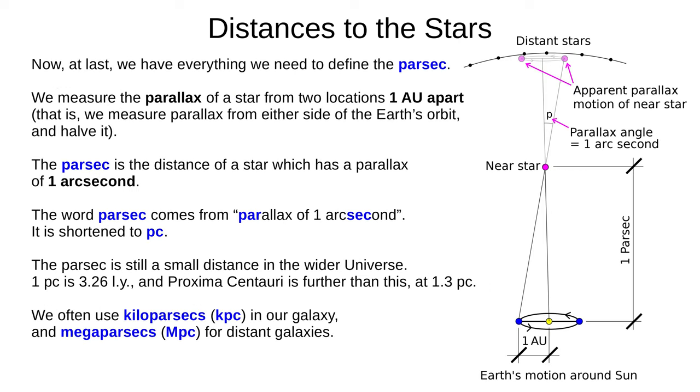And now we're finally ready to define the parsec. First, measure the parallax of a star from two locations 1 AU apart. To do this, measure the parallax from either side of the Earth's orbit and halve it. If the parallax is 1 arcsecond, the star has a distance of 1 parsec. You can see this in this very not-to-scale diagram. Parsec comes from parallax of 1 arcsecond, and is shortened to lowercase pc. The parsec is still a small distance in the universe, at 3.26 light-years. Even Proxima Centauri is further than this, about 1.3 parsecs away.